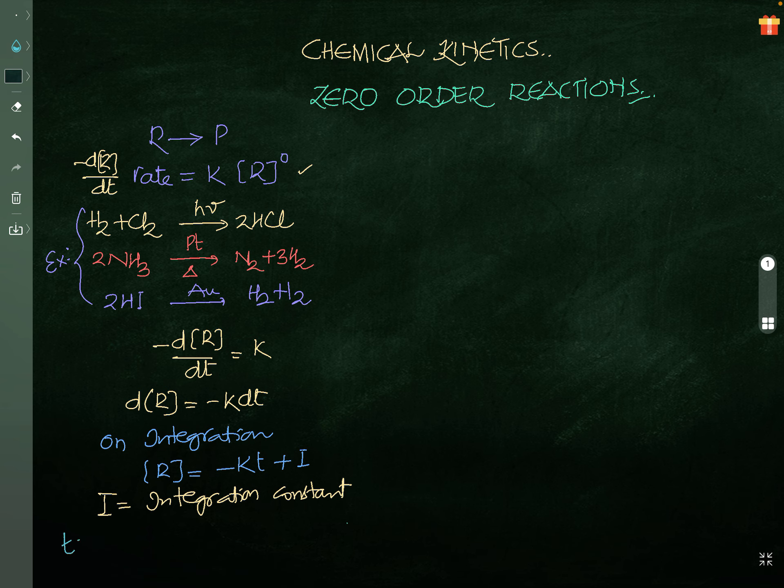Now I want to go with T equals 0. T equals 0, which means the concentration of reactants can be taken as R0, where R0 is initial concentration. When T equals 0, R equals R0. And this now I am substituting in this expression. In place of R, I am going to write R0 now. R0 equals minus K times 0 plus I. Means I equals R0. Now I value I am going to substitute in this expression.